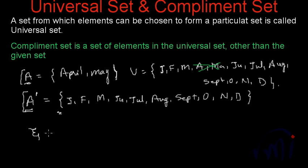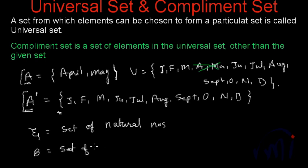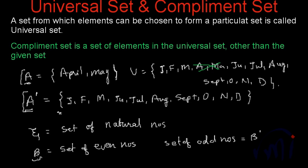Suppose I define universal set psi as the set of natural numbers and set B as the set of even numbers, then the set of odd numbers will be the complementary set of set B, written as B dash. The set of even numbers is the complement of the set of odd numbers and vice versa. To summarize: a universal set is a set from which we can draw elements to form a particular set, and a complement set is a set of elements from the universal set which are not in that particular set.